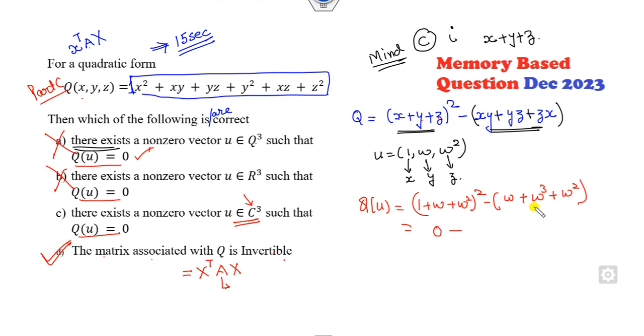Again this value is 1. 1 plus omega plus omega square is 0. So yes, there exists U. This is my U which belongs to the complex plane such that this value will be 0. So that is also the right answer. C and D are my correct answers to this problem.